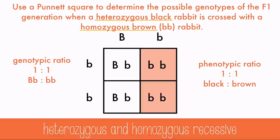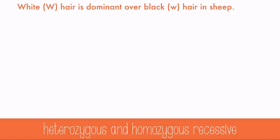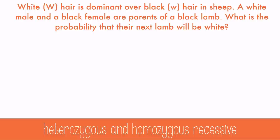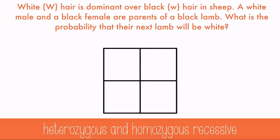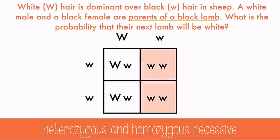Let's try another problem. White hair is dominant over black hair in sheep. A white male and a black female are parents of a black lamb — what is the probability that their next lamb will be white? The only way the parents could have a black lamb is if the white-haired sheep is heterozygous, which means there would be a 50-50 chance that the next lamb would be white.